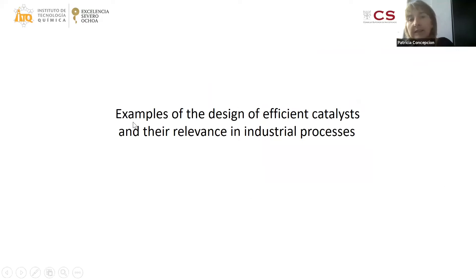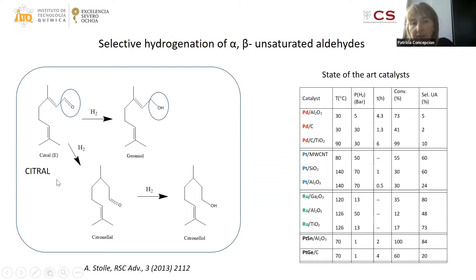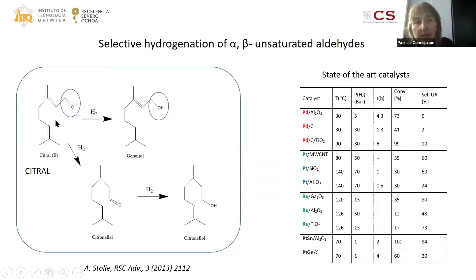Let me give some examples of the design of efficient catalysts and their relevance in industrial processes. One important reaction in many industrial processes related to the production of fragrances and pharmaceuticals is the selective hydrogenation of alpha, beta unsaturated aldehydes — like citral to geraniol. Obtaining the unsaturated alcohol is really challenging since, from a thermodynamic point of view, hydrogenation of the carbon-carbon double bond is more favorable than hydrogenation of the carbonyl group.